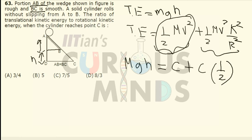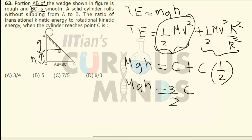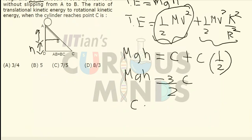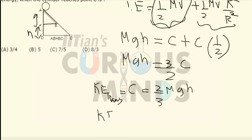Basically the total energy is 3/2 c, which equals mgh. So c equals 2/3 mgh — this is the translational kinetic energy at point B. The rotational kinetic energy at point B is equal to half of c, which equals 1/3 mgh.